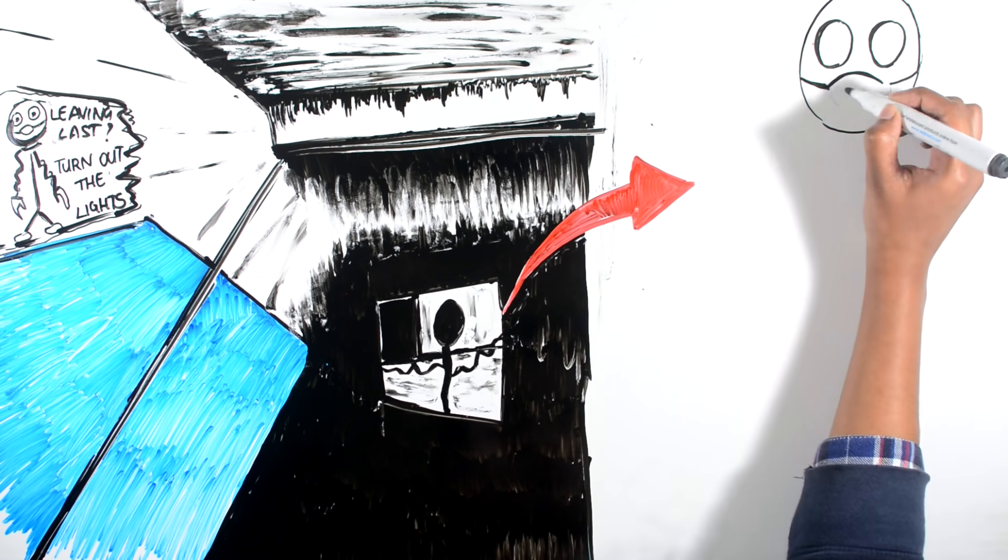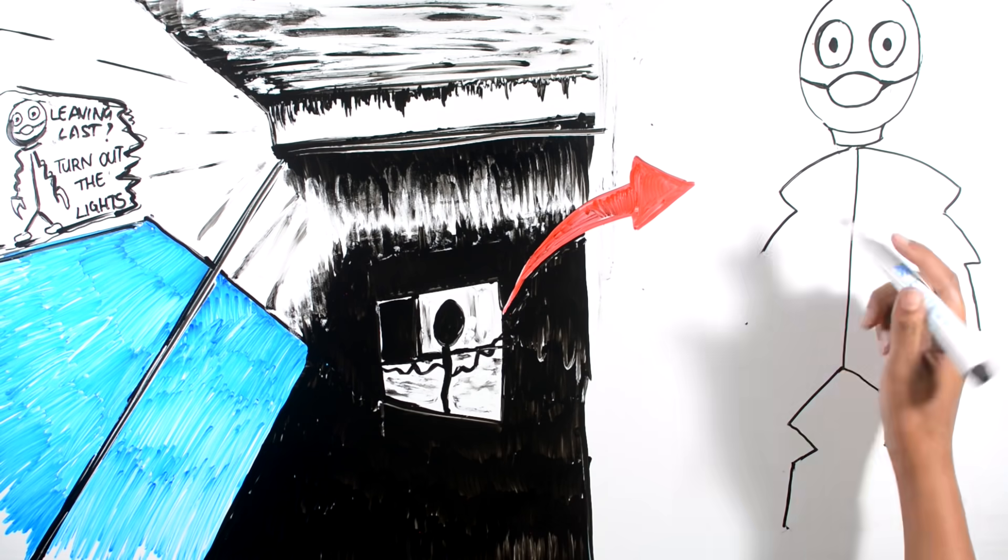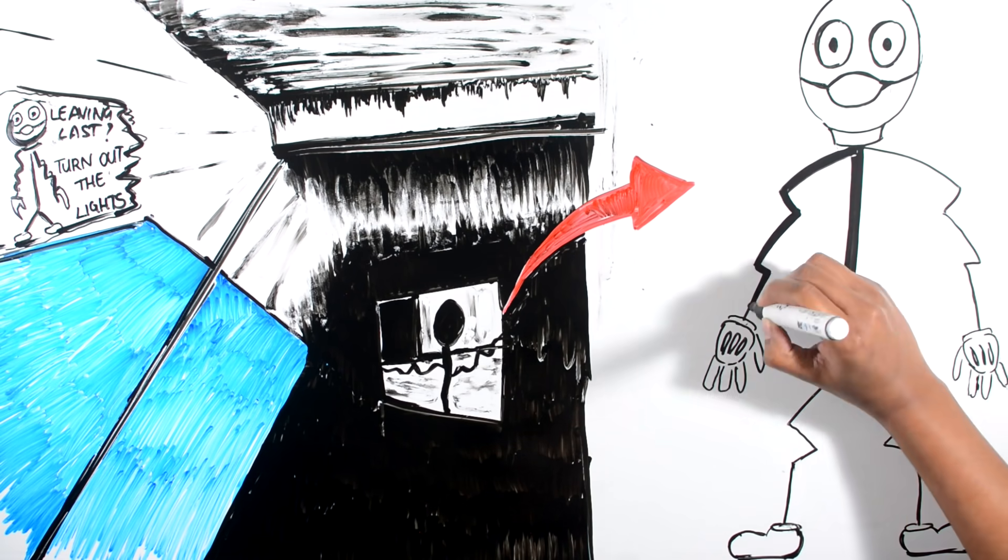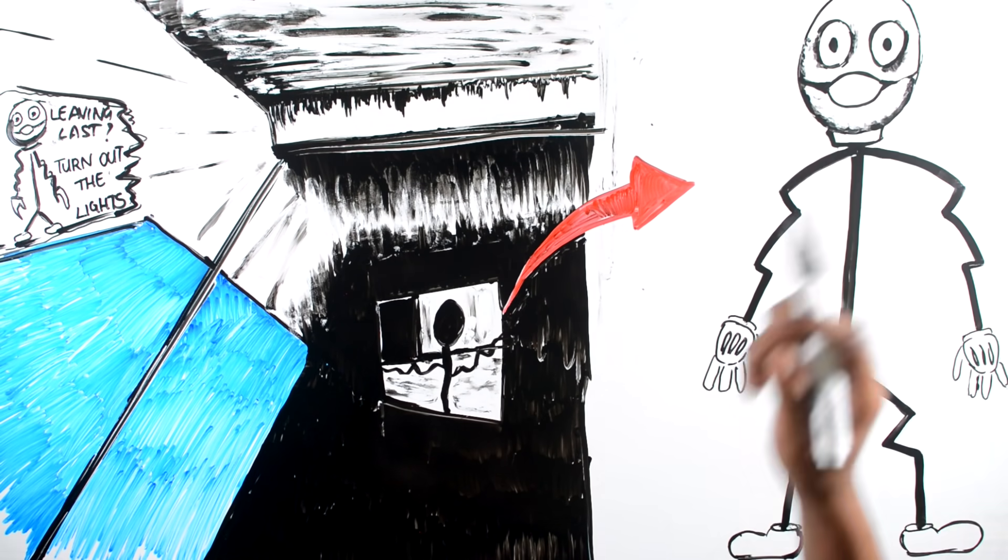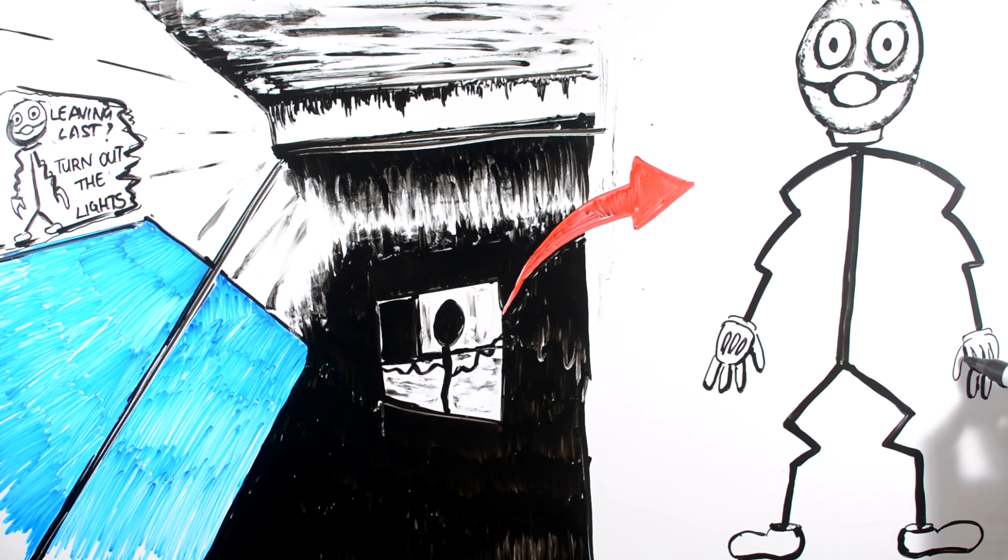On this light bulb, eyes, nose and mouth are drawn out. So he has black eyes and there's a weird smile drawn on his face. It looks creepy.